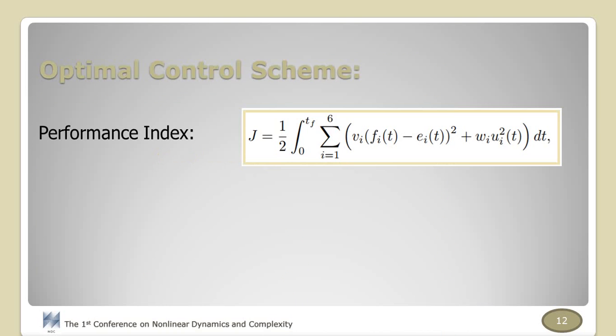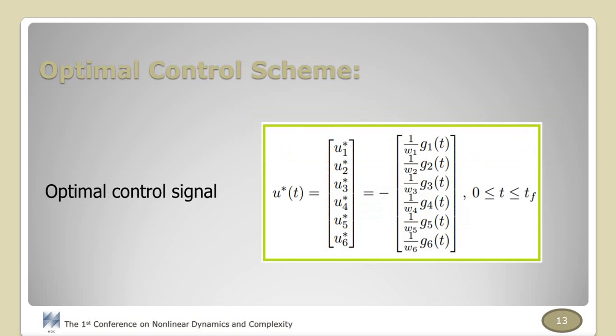In order to stabilize the hyperchaotic behavior of the integer order non-autonomous system, we use the optimal controller based on Pontryagin's maximum principle. Considering the system previously introduced, the performance index is as shown here, where Wi and Ui are weighing coefficients, Ei is the ith coordinate of the equilibrium point of the system, and the boundary conditions for the state variables are also considered. After considering necessary conditions of optimality, the optimal control signal is computed by these equations.